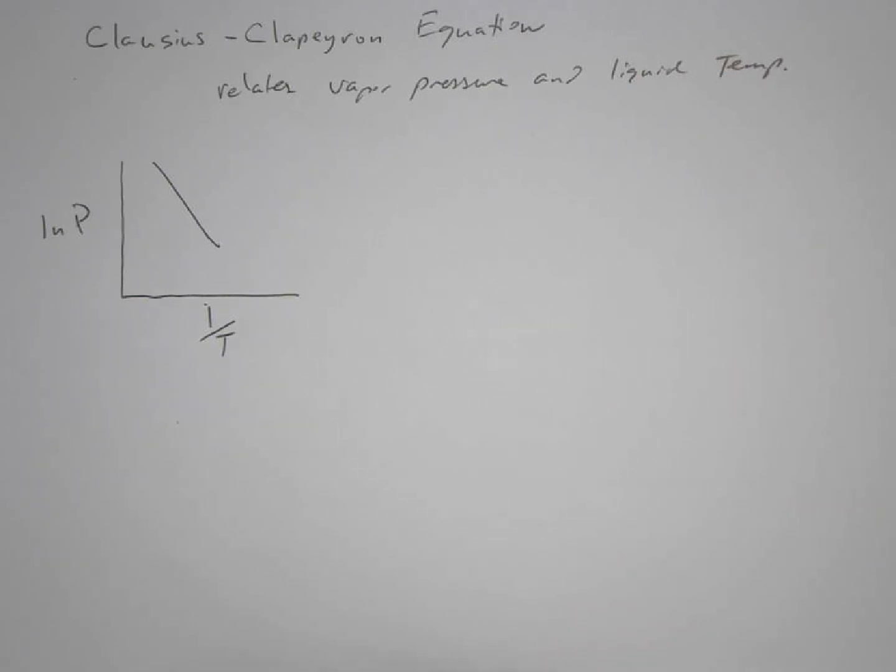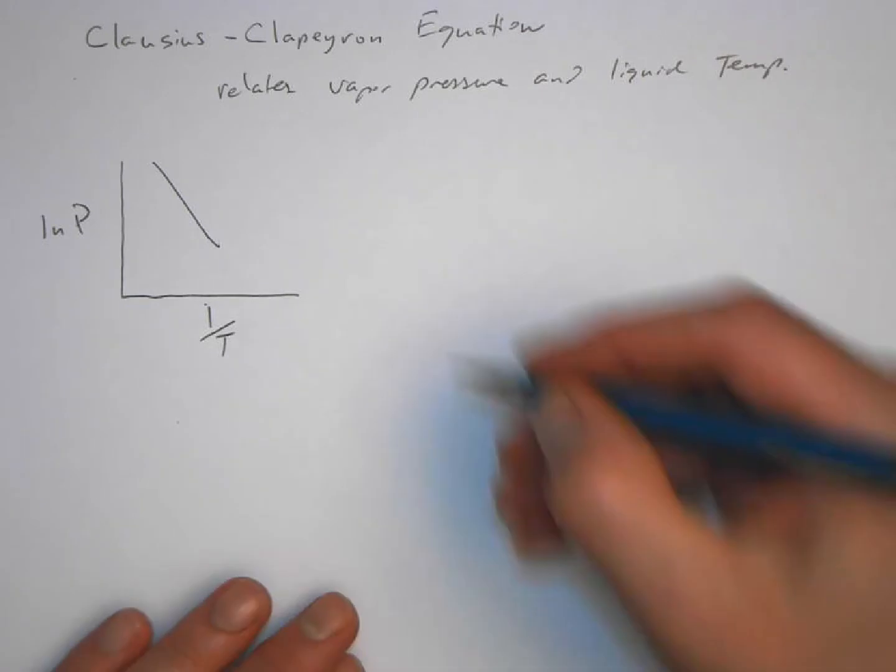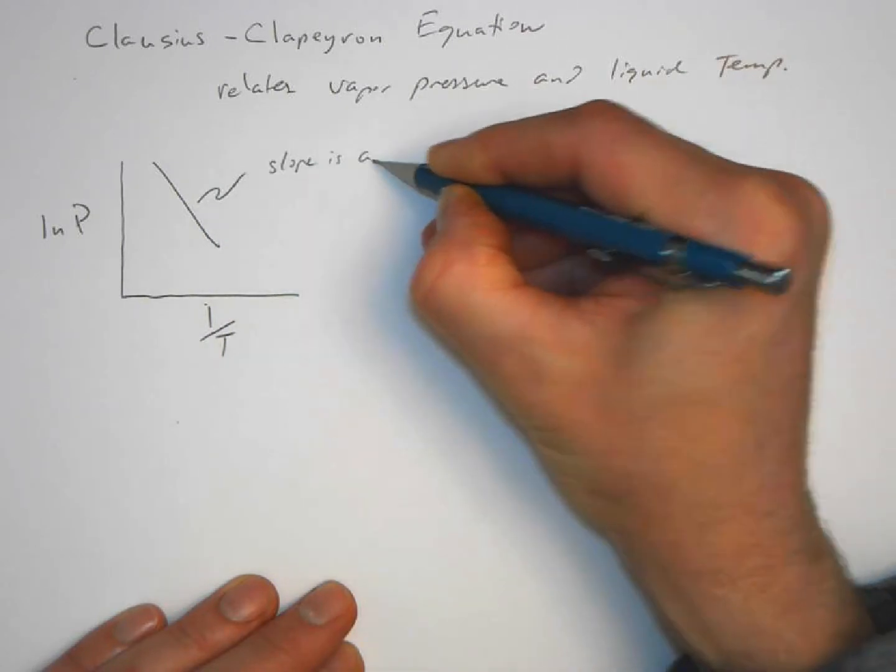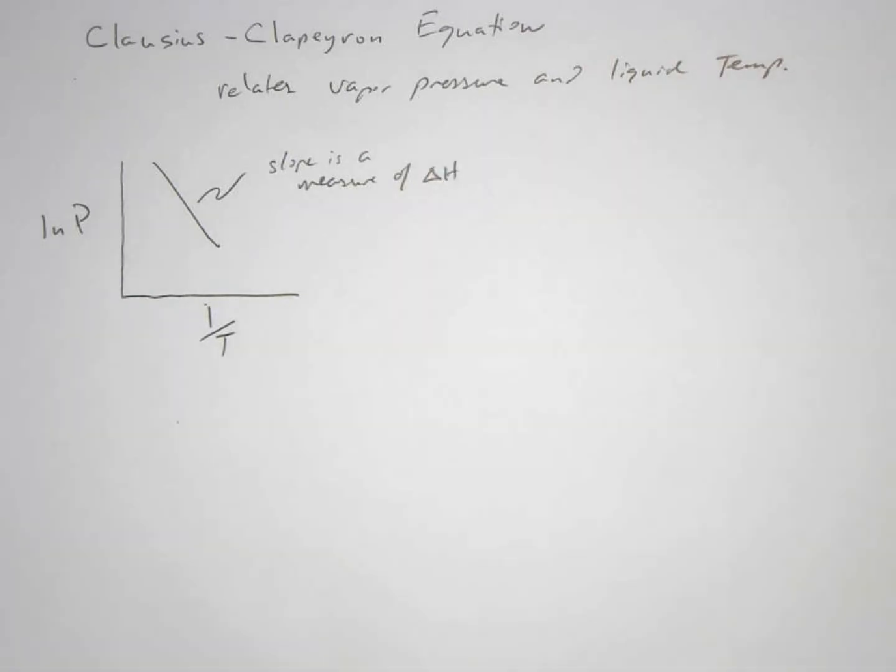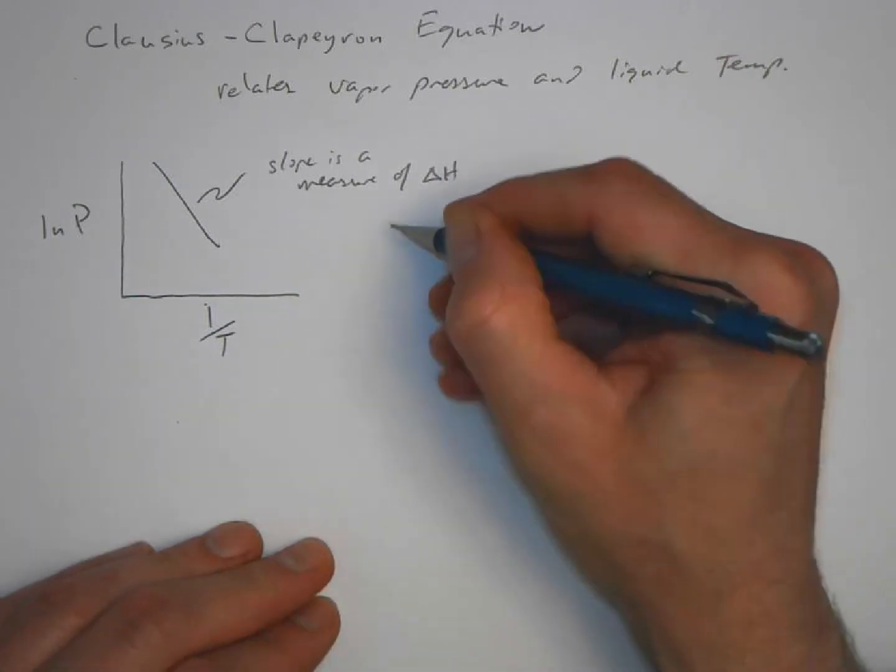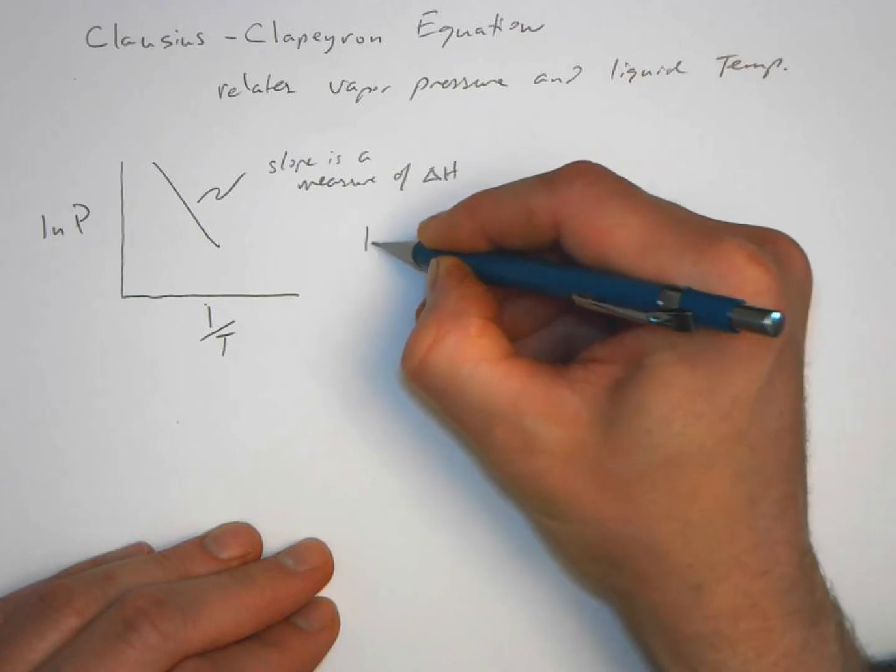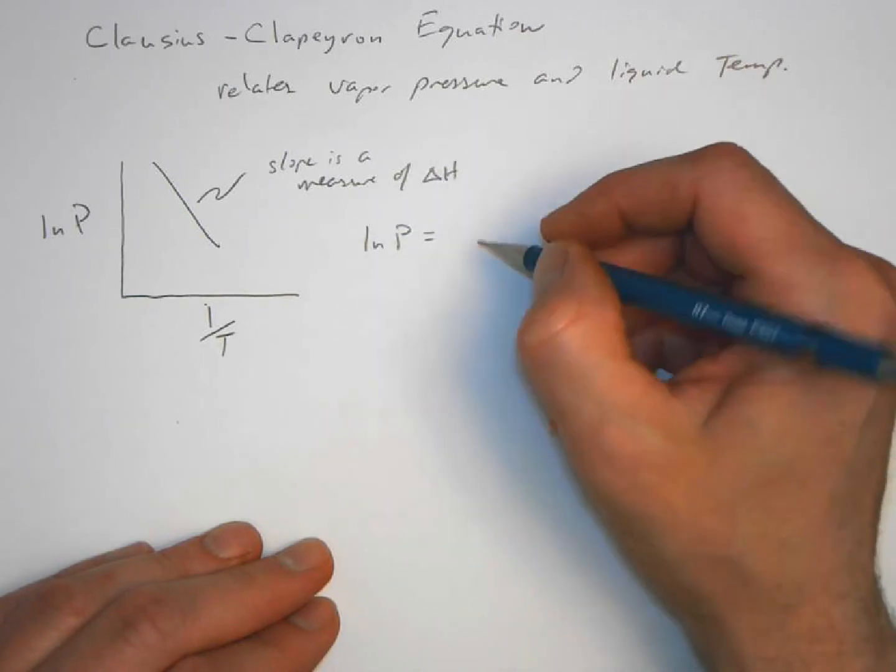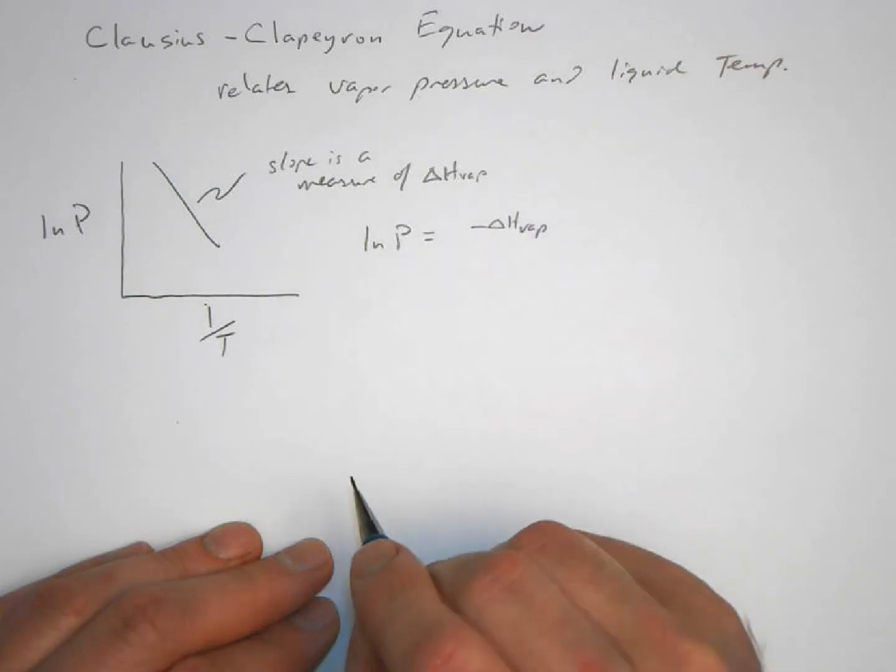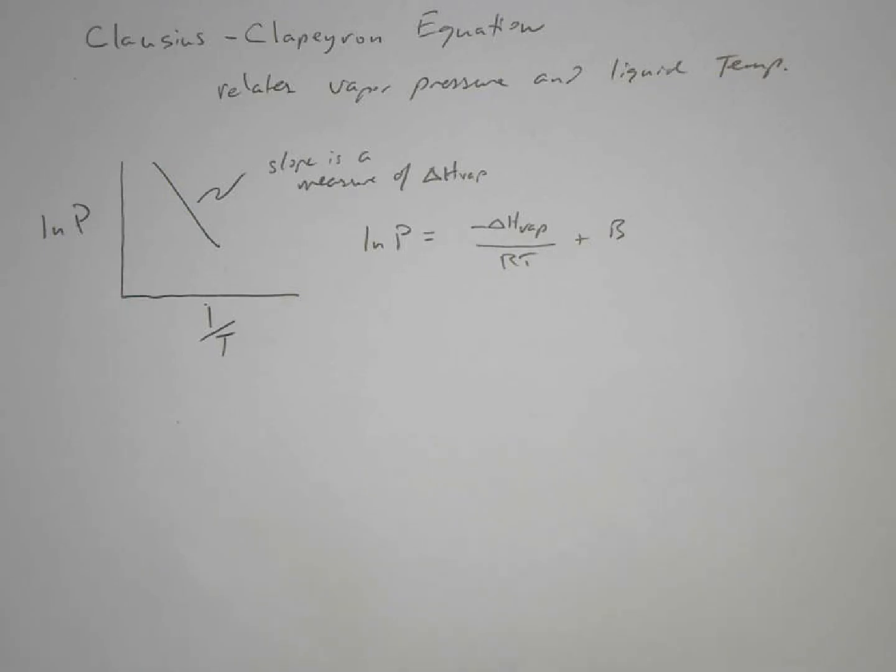What we can do is the following: this straight line, the slope, is a measure of the amount of energy involved or needed to do that. Because this is a line, what we can do is write the natural log of the pressure equals the delta H of vaporization over R, our gas constant, times T, plus B, some constant.